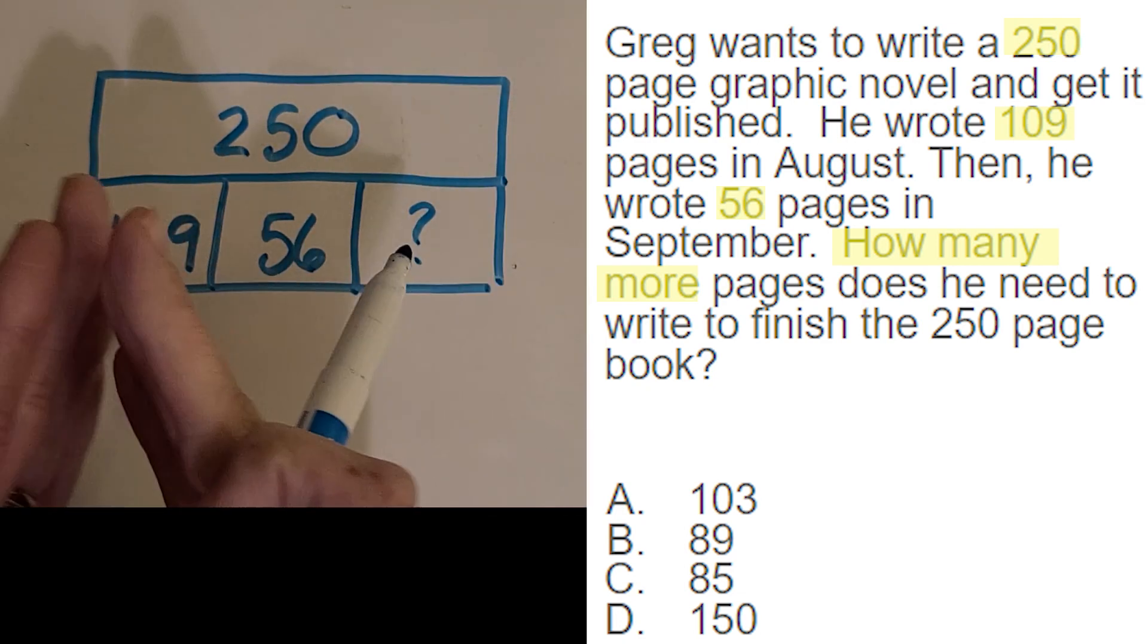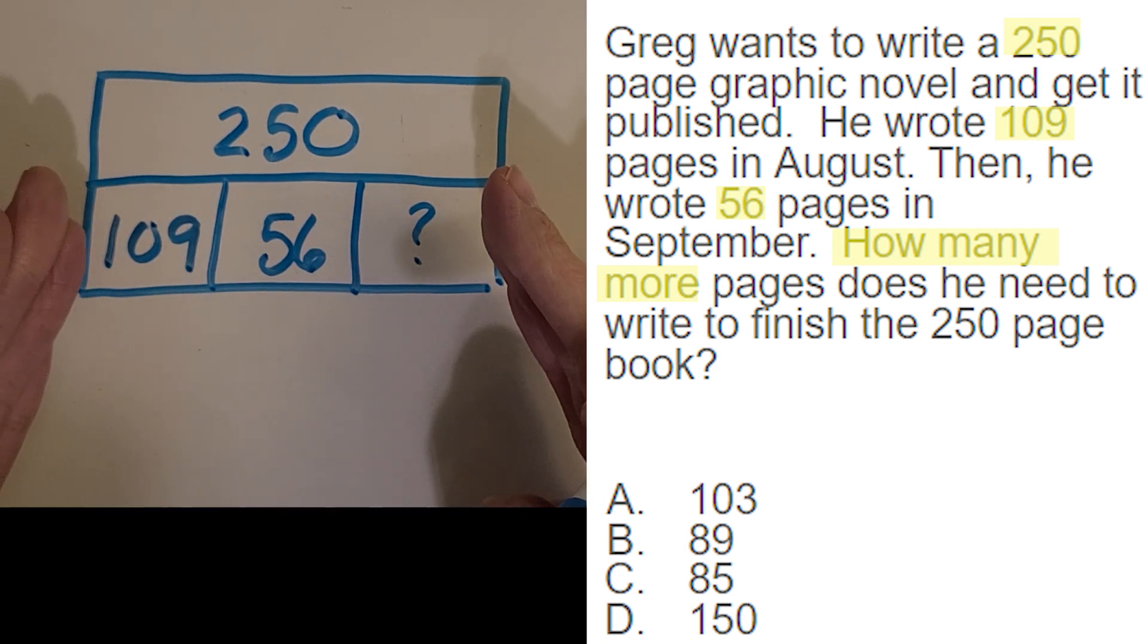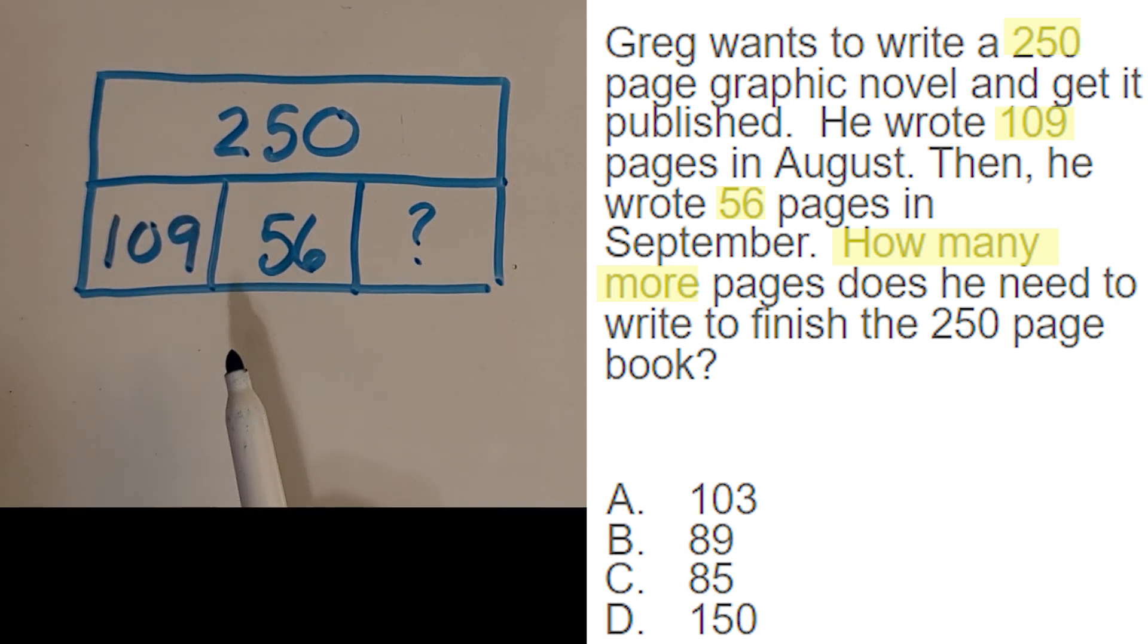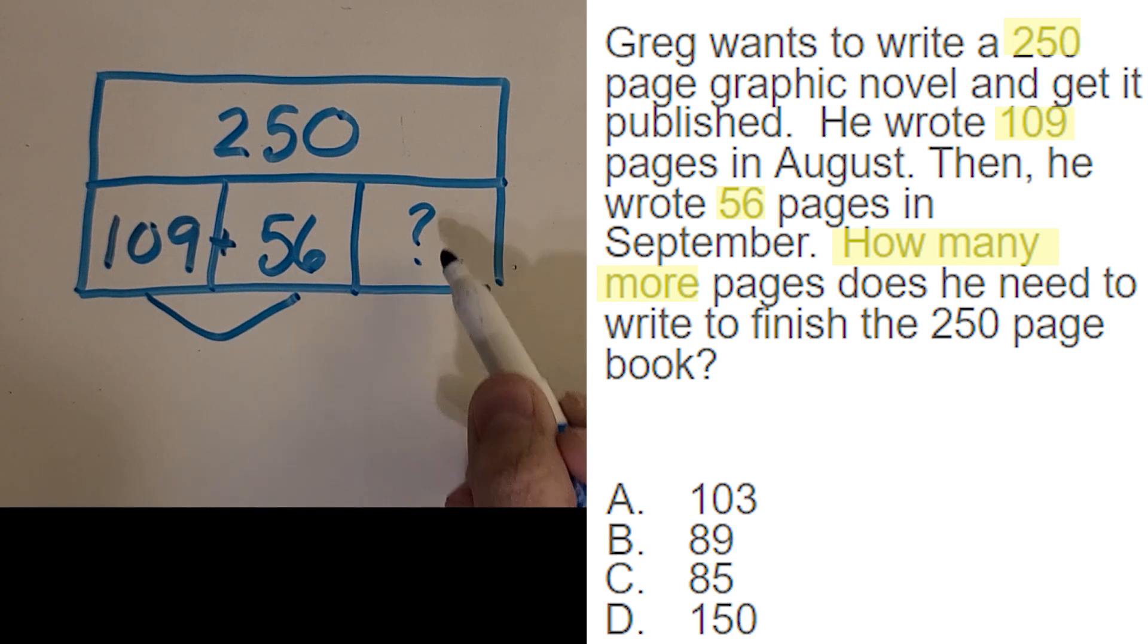So you can kind of see that this space right here is the same length as this total up here. So now I'm going to think through what I can do to solve this. So I think something that would be helpful is to find out how much he's already written. If I add these two, then I'll know this chunk right here. And I'm one step closer to finding out the mystery right here. So let's go ahead and do 109 plus 56.